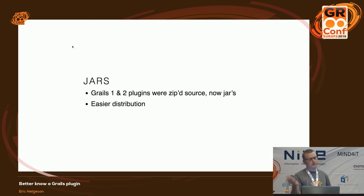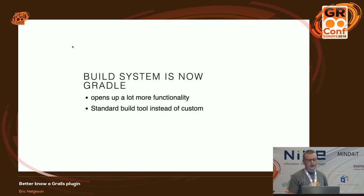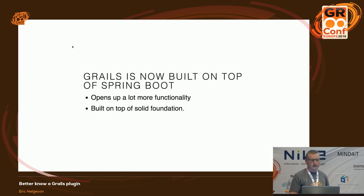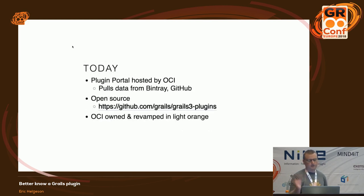As you know, Grails plugins moved to JARs — they're just dependencies in your build.gradle instead of zips. It's a lot easier to distribute; they're not on a custom distribution anymore, they're just on Bintray. Gradle opens up a lot more functionality than the custom Ant build system we had before, and being built on top of Spring Boot opens up even more. We'll focus on Grails 3 and what it is today.